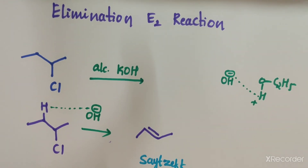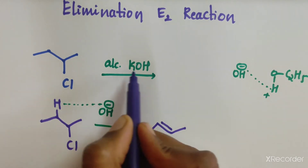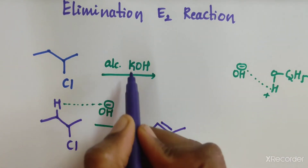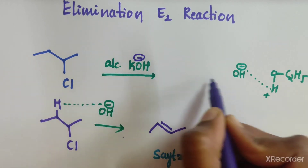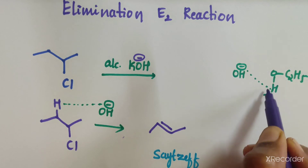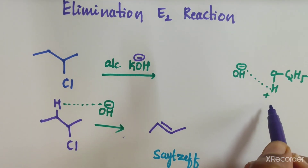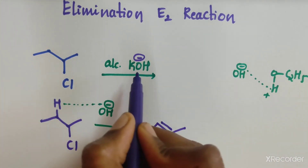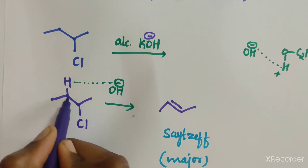Now we move to E2 elimination reaction. The conditions for this example are alcoholic KOH — KOH is a strong base. The substrate is given, and OH⁻ is the active base. This is the alpha carbon and these are the beta hydrogens. OH⁻ is a strong base that abstracts the proton.